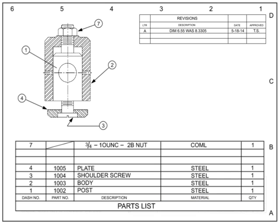Most modern drawing standards also require a dash number, which helps locate the part in the field of the drawing. This item number is referenced both in the parts list and in the field of the drawing to identify the part.